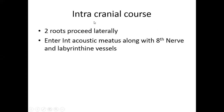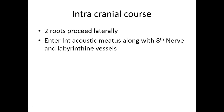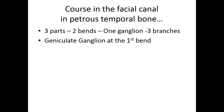Now the intracranial course: after coming out of the brainstem, the two roots proceed laterally and enter the internal acoustic meatus along with the eighth nerve and the labyrinthine vessels. On the internal side in the posterior cranial fossa, the internal acoustic meatus transmits the seventh nerve, eighth nerve, and labyrinthine vessels. Then the nerve proceeds in the facial canal at the floor of the internal acoustic meatus, where there are three parts, two bends, one ganglion, and three branches given off in the facial canal.